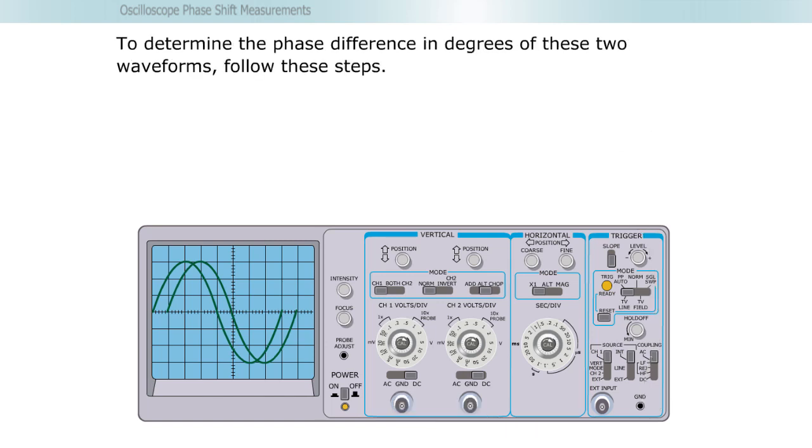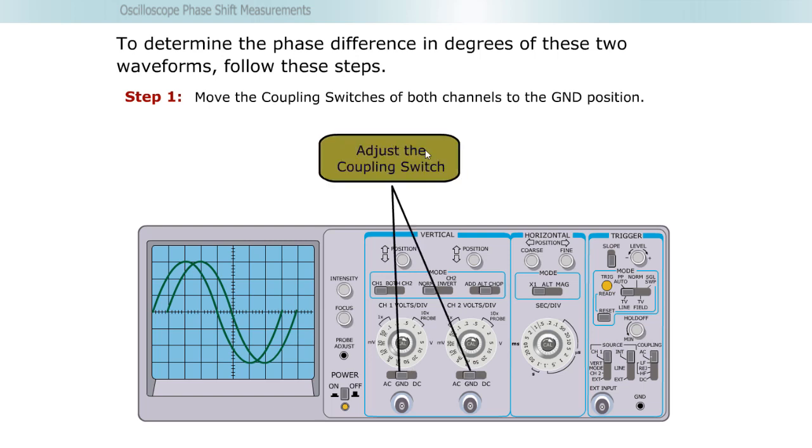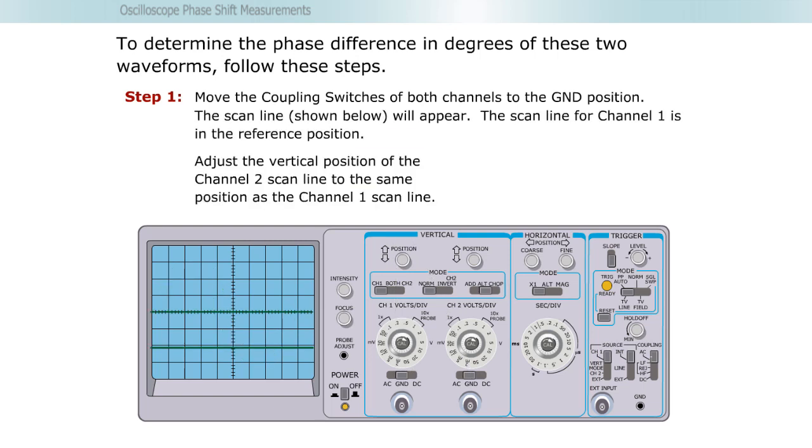To determine the phase difference in degrees of these two waveforms, follow these steps. Step one, move the coupling switches of both channels to the ground position. The scan line will appear. The scan line for channel one is in the reference position. Adjust the vertical position of the channel two scan line to the same position as the channel one scan line.